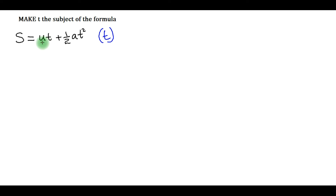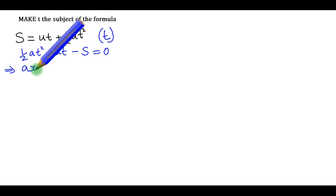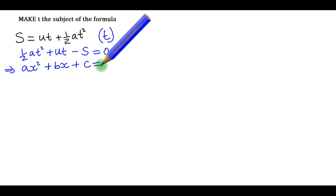If you look at t, here we have a power of 1 and also a power of 2. It seems like a quadratic equation. Let me rewrite it as: ½at² + ut − s = 0. This looks like a quadratic equation of the form ax² + bx + c = 0.